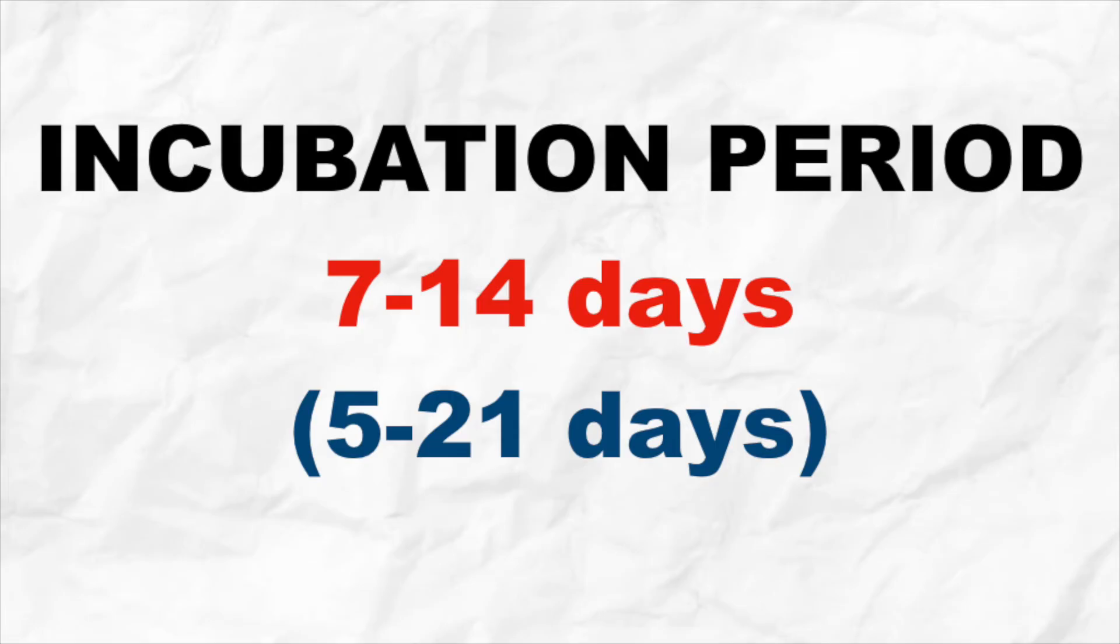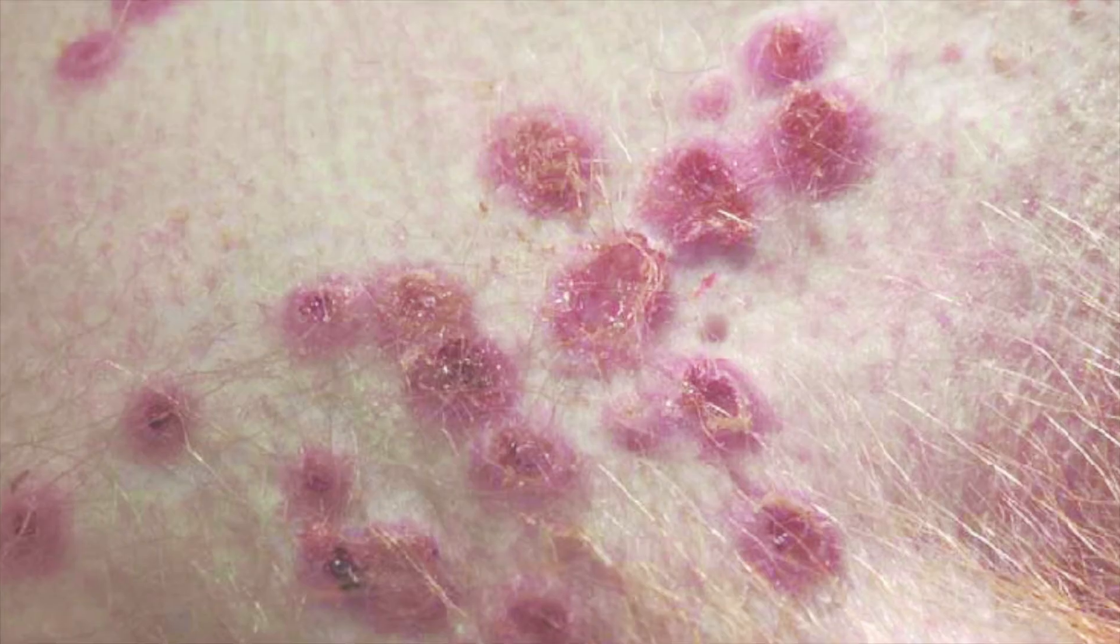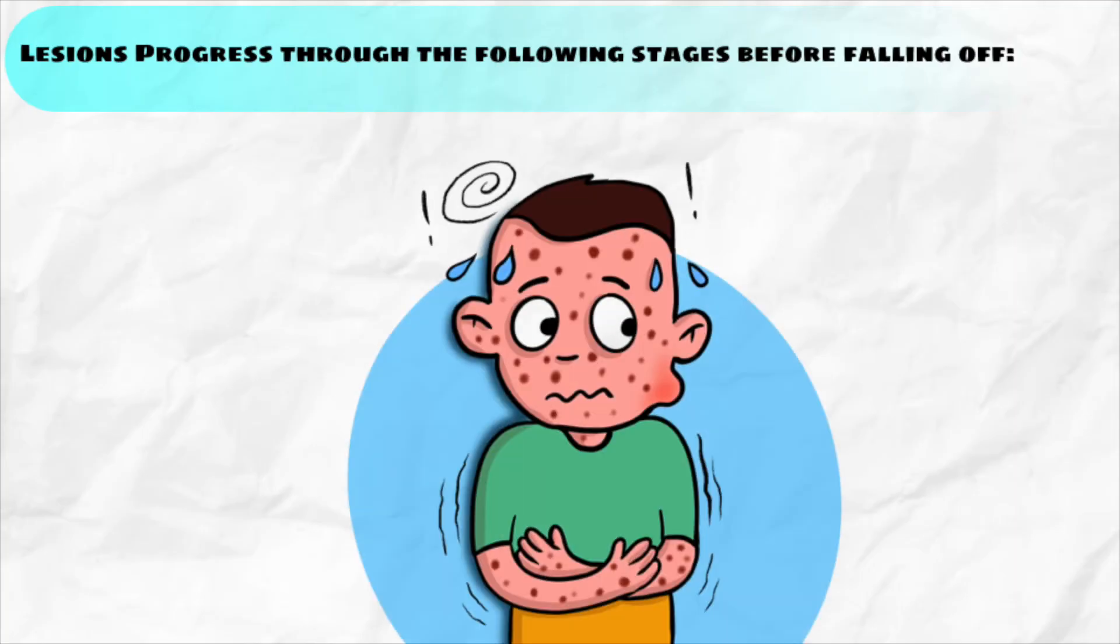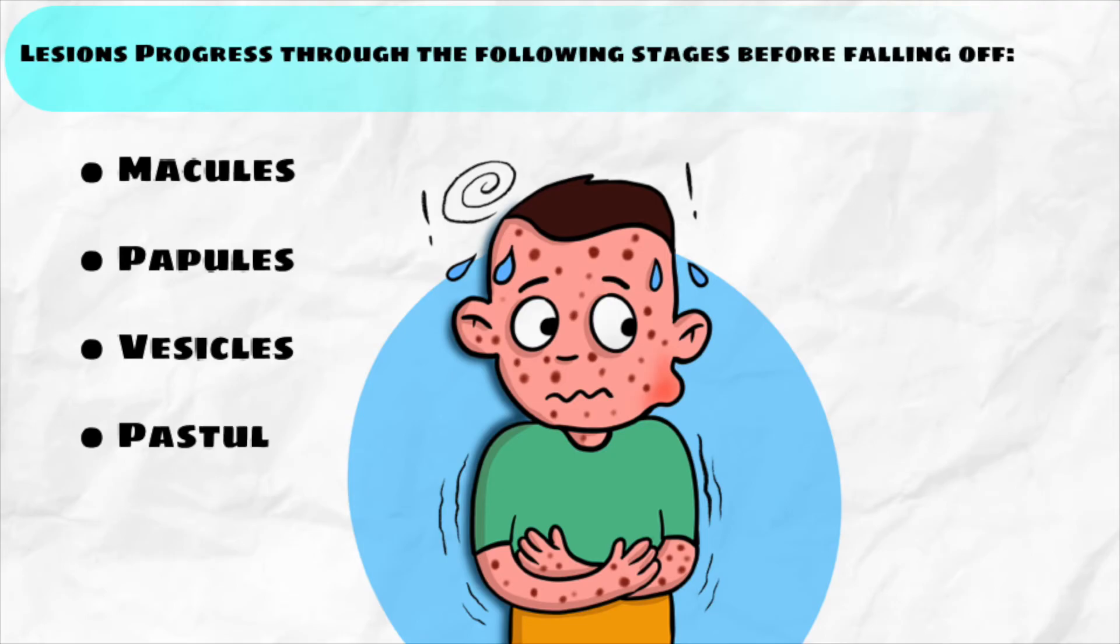Within 1-3 days after the appearance of fever, the patient develops a rash often beginning on the face then spreading to other parts of the body. Lesions progress through the following stages before falling off: macules, papules, vesicles, pustules, scabs. The illness typically lasts for 2-4 weeks.